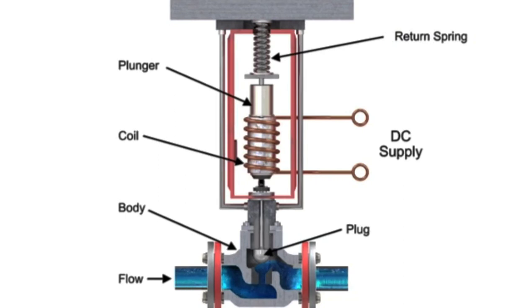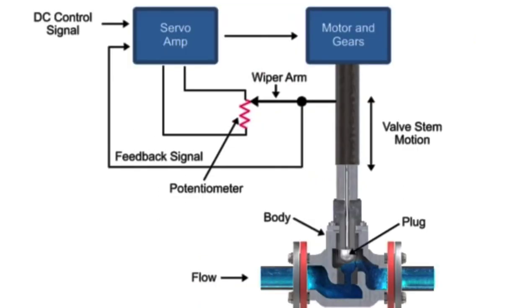Another method for variable valve positioning uses a motor and is referred to as proportional control mode. Using a gear motor attached to the valve stem, a servo amplifier provides a DC control signal that moves the valve to the desired position.